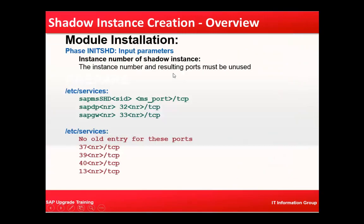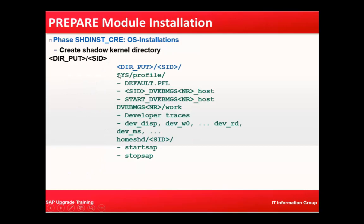In the shadow instance creation, there are some input parameters and based on those the instance number of the shadow instance is determined. The /etc/services file is populated with three services: SAP MS SHD, the dispatcher, and the gateway. These three services are populated, with no old entries for ports 3700, 3900, 4013, etc.